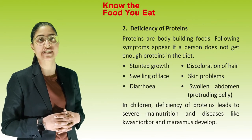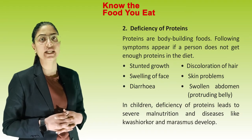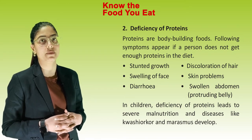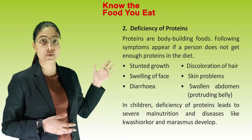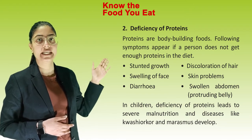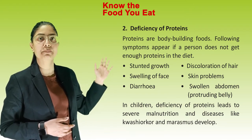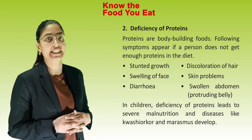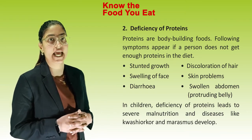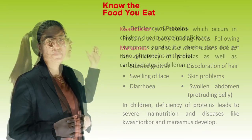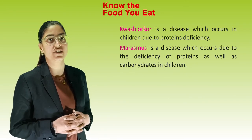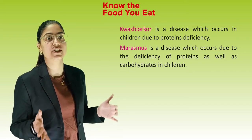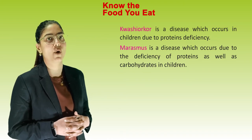Deficiency of proteins: Proteins are body-building foods. Following symptoms appear if a person does not get enough protein in the diet: stunted growth, swelling of face, diarrhea, discoloration of hair, skin problems, and swollen abdomen or protruding belly. In children, deficiency of protein leads to severe malnutrition and diseases like Kwashiorkor and Marasmus. Kwashiorkor occurs in children due to protein deficiency. Marasmus occurs due to deficiency of both proteins and carbohydrates in children.